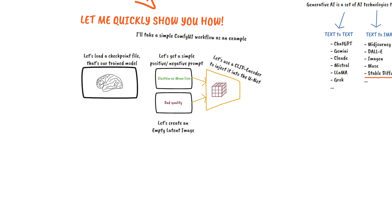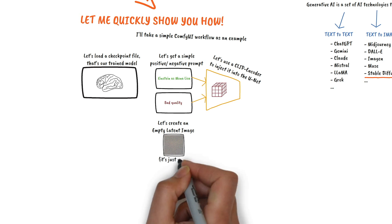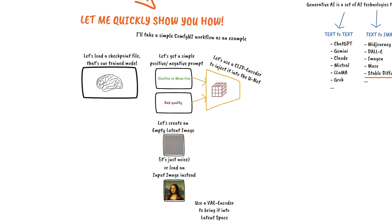Then we create an empty latent image, which is just noise. Or we can also load an input image instead. But then we also need a VAE encoder to bring it into latent space.